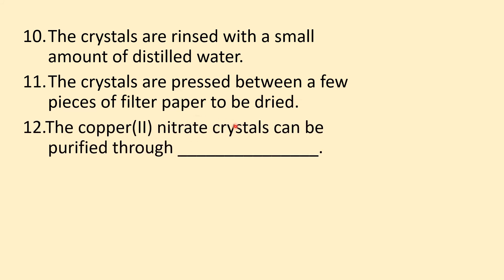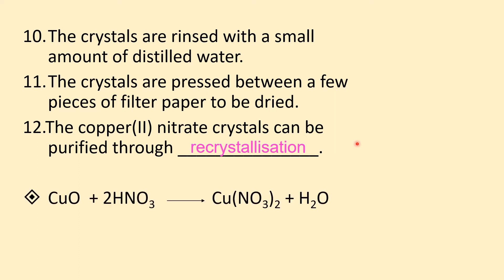The copper(II) nitrate crystal can be purified through recrystallization. The chemical equation: copper oxide reacts with 2 mol of nitric acid to produce 1 mol of copper nitrate and 1 mol of water.